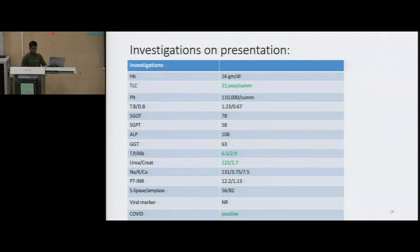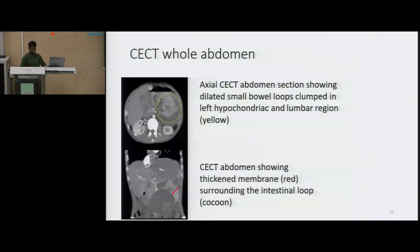Although we made a clinical diagnosis of acute intestinal obstruction, the lump on examination remained a question that was unanswered yet. We went ahead with a contrast CT scan of the abdomen, which showed features of small bowel obstruction with bowel loops clumped in the left hypochondriac and left lumbar region, and features of ischemia in a segment of small bowel — the cocoon. We can see here the cocoon has formed, and in the lower image, you can see the thick membrane surrounding the dilated bowel loops.